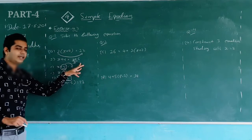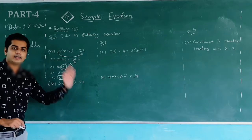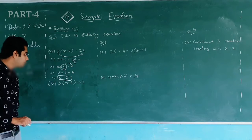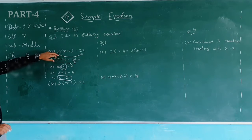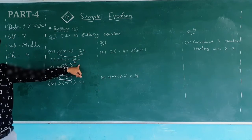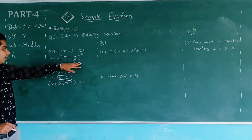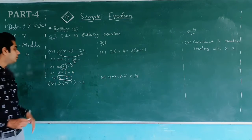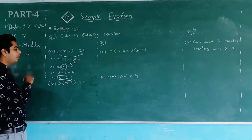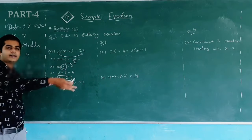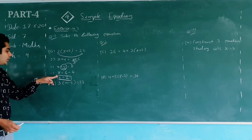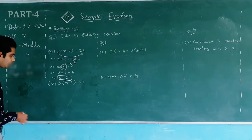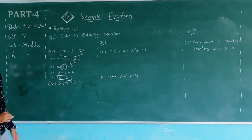Now x still has +4, so shift +4 to the right side — it becomes −4. So x = 6 − 4 = 2. The final answer is x = 2. In the transposing method: whatever is in multiplication with the whole bracket shifts to the denominator on the other side; whatever is in addition shifts to subtraction.